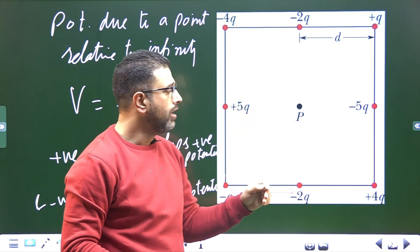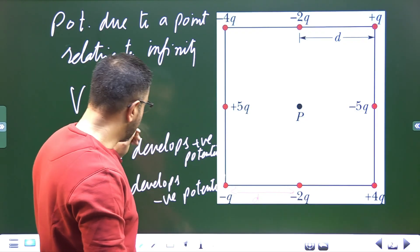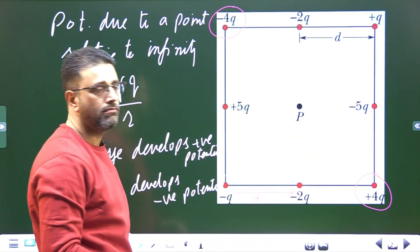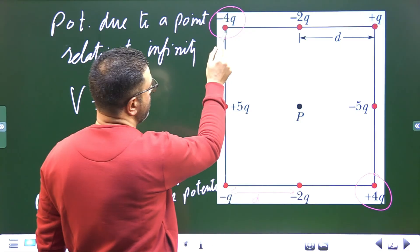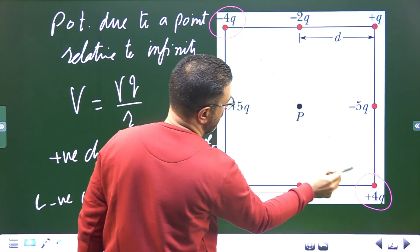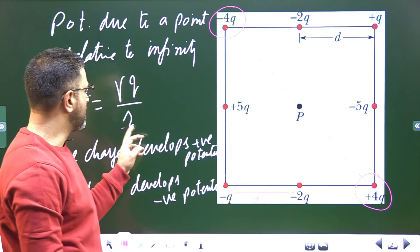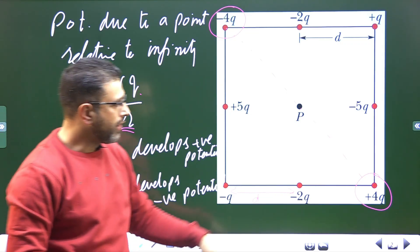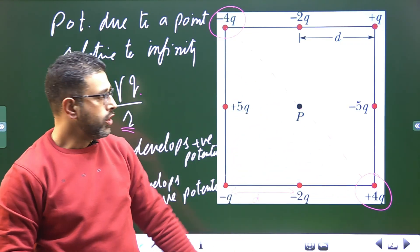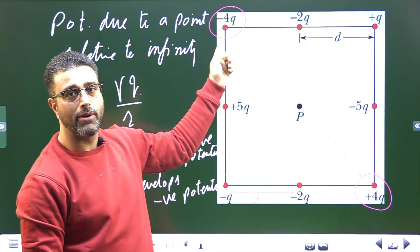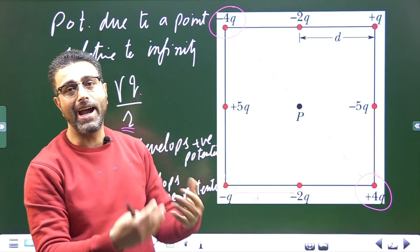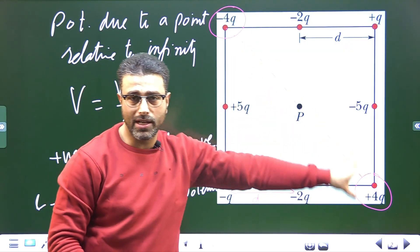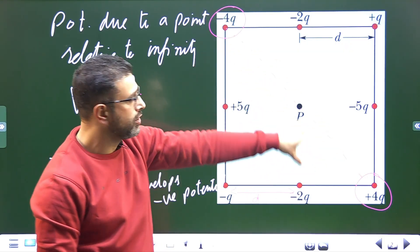Let's look at charges pairwise. Consider this charge and this charge — they are equidistant from P, with equal half-diagonal distances. The charge value is 4q for both, but one is positive and the other is negative. So this one develops positive potential and the other develops equal but negative potential. When you add them, the result is zero. The total potential due to these two charges is zero.